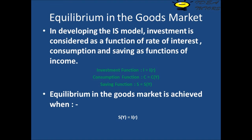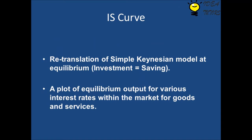In developing the IS model, investment is considered as a function of the rate of interest, and consumption and saving as functions of income. Equilibrium in the goods market is achieved when savings are equal to investment. At all points on the IS curve, the goods market is in equilibrium.